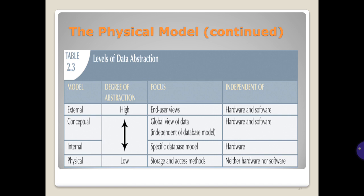Abstraction levels summary: the Conceptual model is independent of both hardware and software. The Internal model is independent of hardware. The Physical model depends on both hardware and software — it is not independent of either.